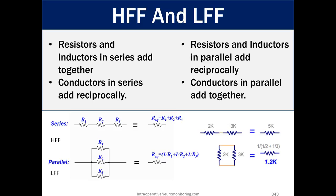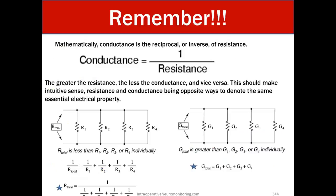Resistors and inductors in parallel add reciprocally and conductors in parallel add together. So when we're talking about conductors, it's the opposite. So remember, mathematically, conductance is the reciprocal or inverse of resistance. So conductance equals 1 over resistance and resistance equals 1 over conductance. The greater the resistance, the less the conductance, and vice versa. This should make intuitive sense, resistance and conductance being opposite ways to denote the same essential electrical polarity. So we have the R total is less than R1, R2, R3, or R3 individually. This mathematical sum is 1 over R total equals 1 over R1 plus 1 over R2 plus 1 over R3 plus 1 over R4. Or the R total is 1 over that entire string there.